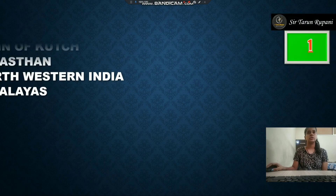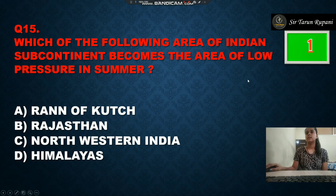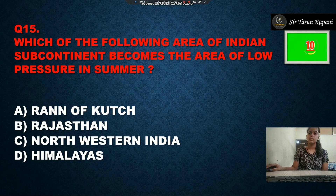Our next question: which of the following areas of the Indian subcontinent becomes an area of low pressure in summer? Option A is Rann of Kutch, option B is Rajasthan, option C is north-west India, and option D is Himalayas. The timer is up and our answer is north-west India, option number C.